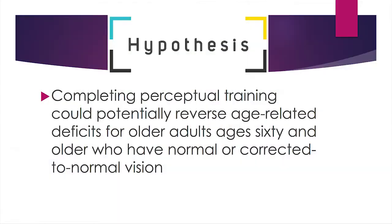Our hypothesis for this study was that completing perceptual training for older adults could potentially reverse age-related deficits for older adults ages 60 and older who had normal or corrected-to-normal vision. We wanted to look at older adults who are relatively healthy and had experienced normal deterioration due to age — not necessarily because of glaucoma or cataracts, but just normal age-related deterioration.